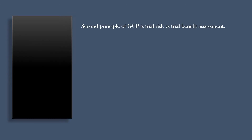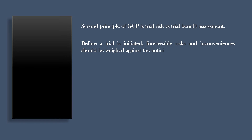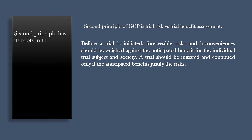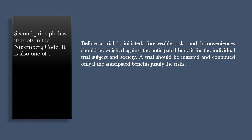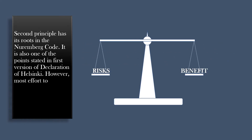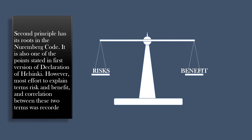The second principle of GCP is trial risk versus trial benefit assessment. Before a trial is initiated, foreseeable risks and inconveniences should be weighed against the anticipated benefit for the individual trial subject and society. A trial should be initiated and continued only if the anticipated benefits justify the risks. This second principle has its root in the Nuremberg Code and is also stated in the first version of the Declaration of Helsinki. However, most effort to explain the terms risk and benefit and the correlation between them was recorded in the Belmont Report.